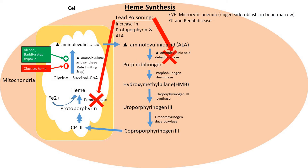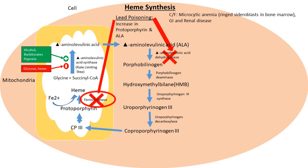Patients will have characteristic ring sideroblasts in the bone marrow. When ferrochelatase is inhibited by lead, iron cannot combine with protoporphyrin to form heme, so iron accumulates in the mitochondria and becomes trapped there. The iron-containing mitochondria form a ring around the nucleus, giving the cell its characteristic ring sideroblast appearance.